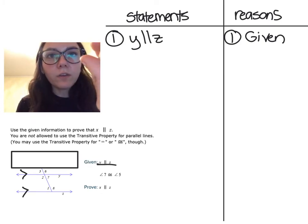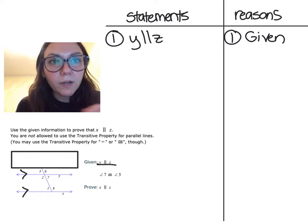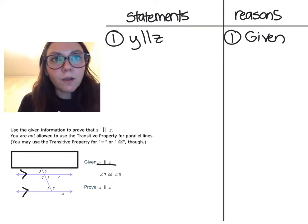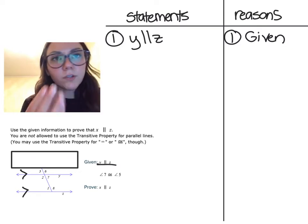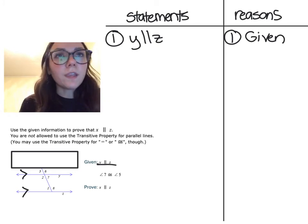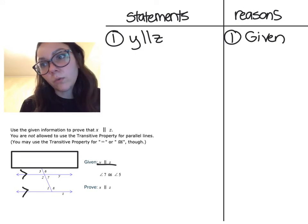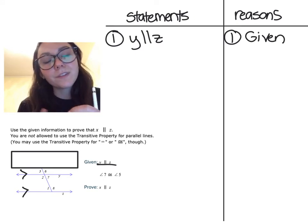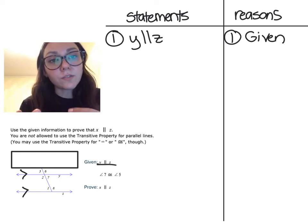So like I said, we wrote down the first given Y is parallel to Z. Let's write a statement off of that. So think about all of your angle pairs and the angles that are listed here. Think about angles that you could either say are congruent or supplementary.